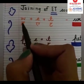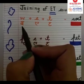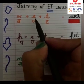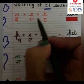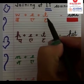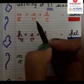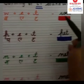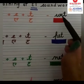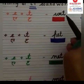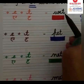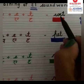What is this, students? W says W, E says E, T says T — W-ET — Wet.